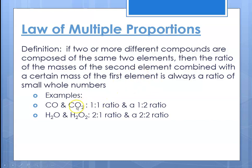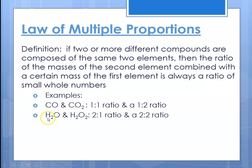Carbon and oxygen can form a couple of compounds: carbon monoxide and carbon dioxide. In the first one, it's a one-to-one ratio; in the second one, it's a one-to-two ratio. The same goes for hydrogen and oxygen — they can form more than one compound. In water, there's a two-to-one ratio of hydrogen to oxygen, and in peroxide, there's a two-to-two ratio.